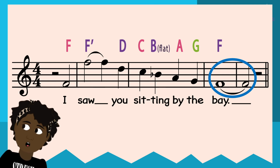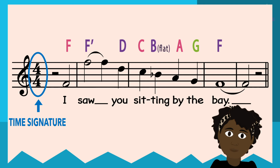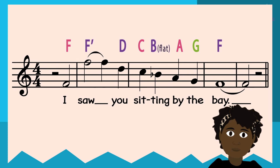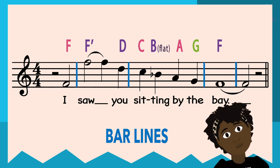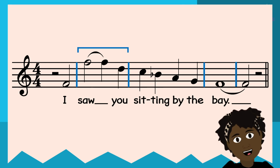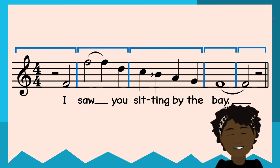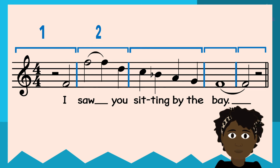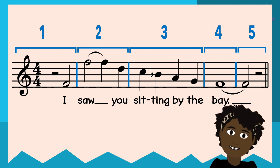But what are the other things that we see? The four over four, which is four-four, tells us the time signature or the meter of the song. The vertical lines are called bar lines and they help divide the music into clear divisions called measures or bars. How many measures do you see in the staff? Let's count them together: one, two, three, four, five — five measures in this staff.